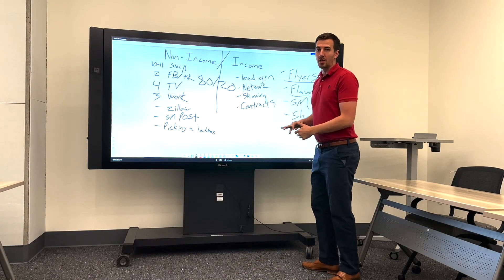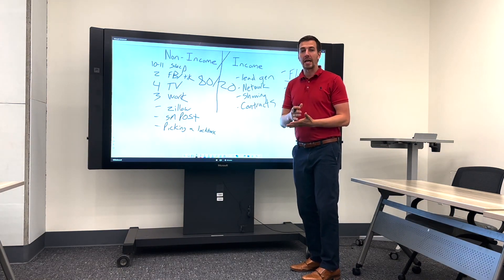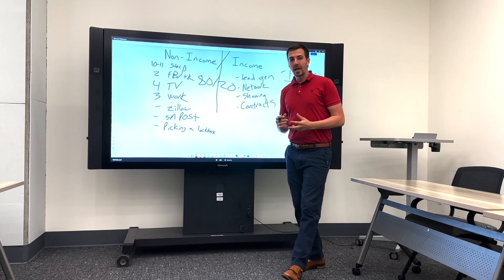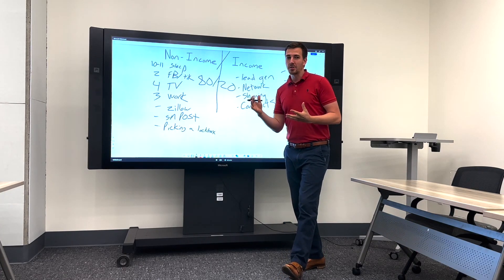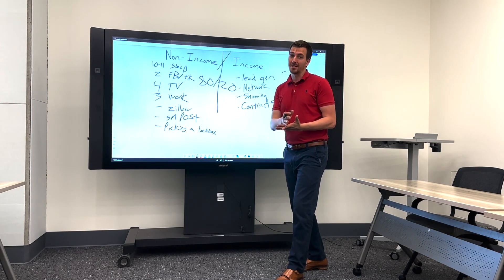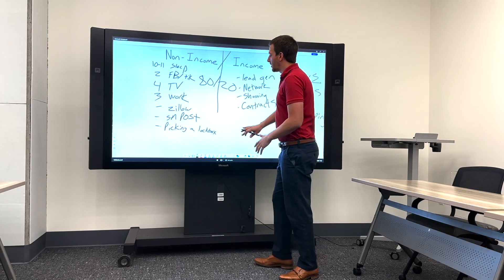We know what we need to be doing. We know the income producing activities. So the quickest way to check if you're doing the right thing is to audit your daily schedule. Go into your calendar and look at what are you actually doing throughout the day? Does this actually help my real estate business? Does this help another business? Does this not help anything? So look at your daily activities.